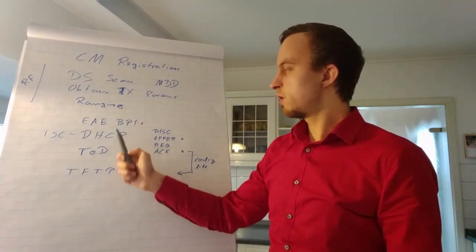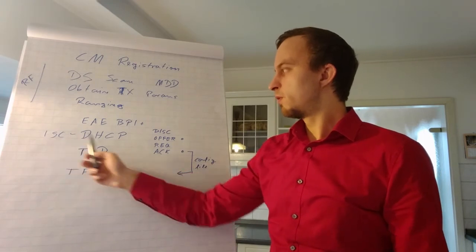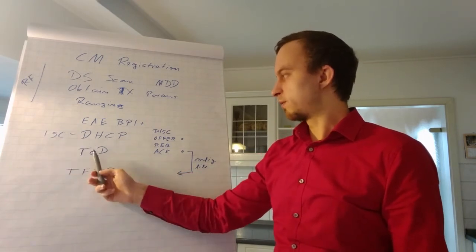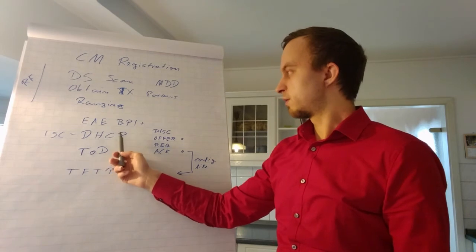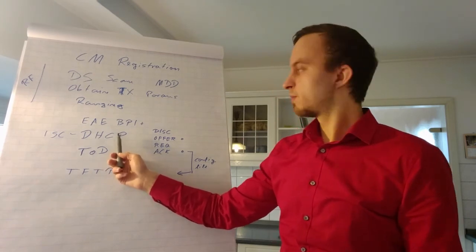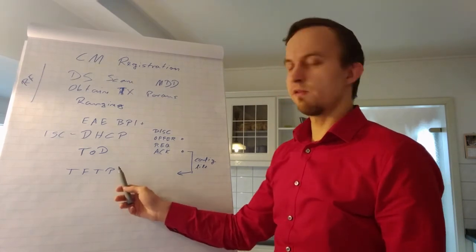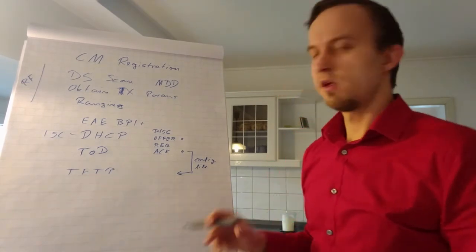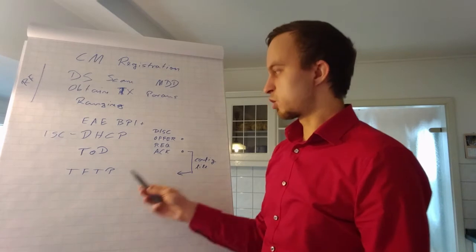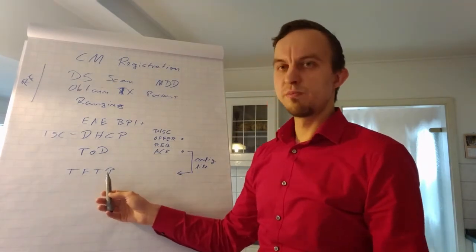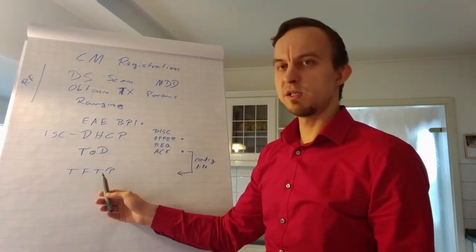I will repeat: we've got some kind of easy encryption which is going on, then we've got the DHCP stuff, we've got the timing protocol. Inside the DHCP messages from the provisioning system is the information where the cable modem can find this configuration file.